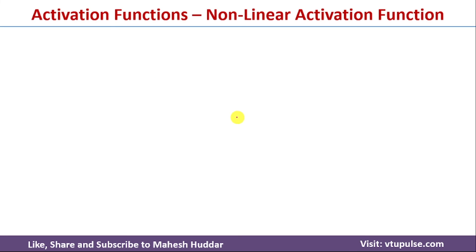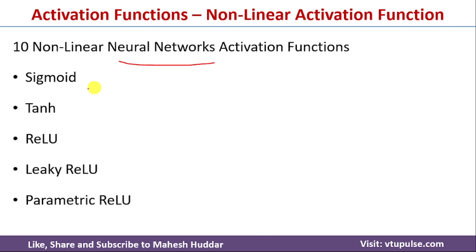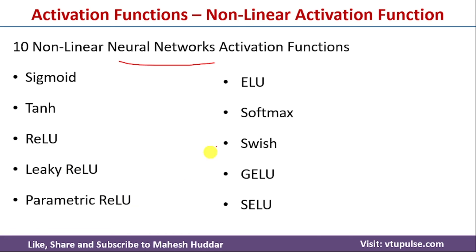There are actually 10 non-linear activation functions in neural networks: sigmoid, tanh, ReLU, Leaky ReLU, Parametric ReLU, ELU, Softmax, Swish, GELU, and SELU. We will discuss each of these activation functions one by one in the next video.